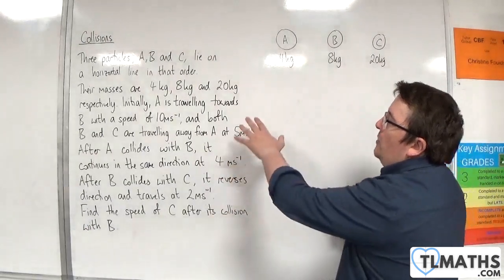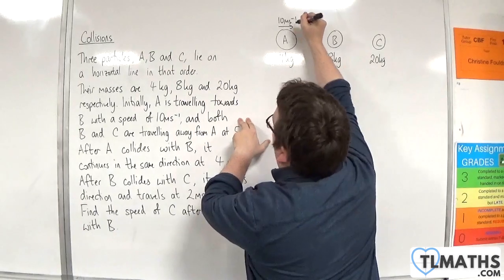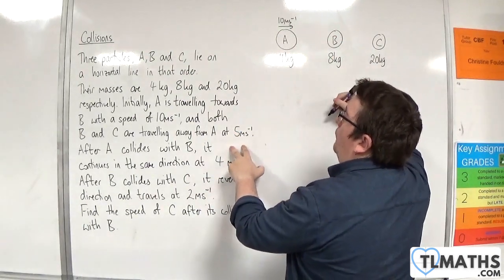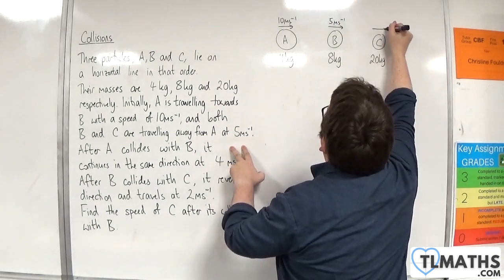Initially, A is travelling towards B with a speed of 10 metres per second. And both B and C are travelling away from A at 5 metres per second. So they must both be travelling to the right at 5 metres per second.